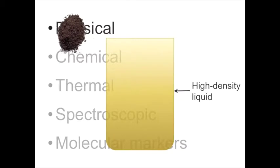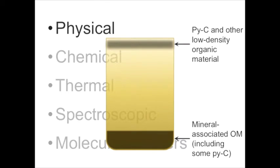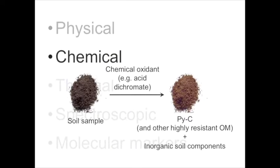Physical techniques rely on differences in size or density to separate pyrogenic carbon from other soil components, following the same principles as physical separation of soil organic matter fractions. Chemical oxidation techniques work by oxidizing the sample. Certain compounds along the pyrogenic carbon continuum are less susceptible to oxidation than other components of the soil, so they are left behind while the other components are lost.